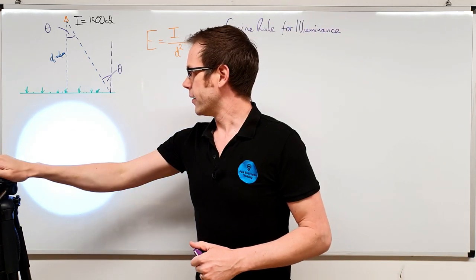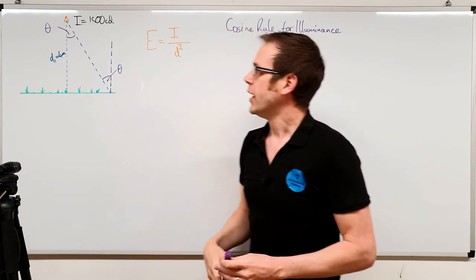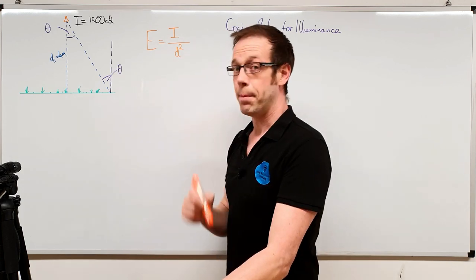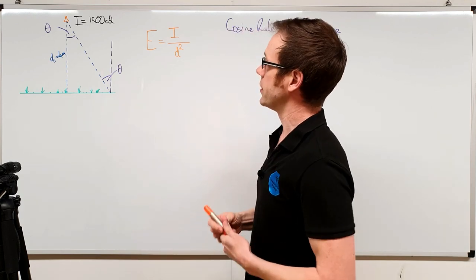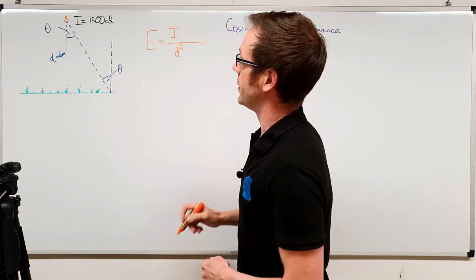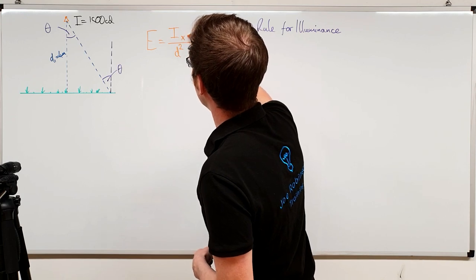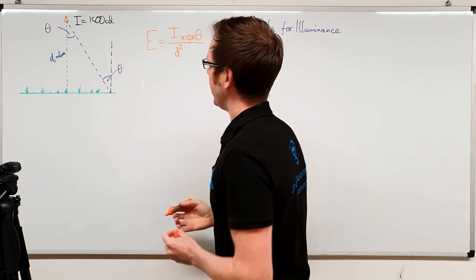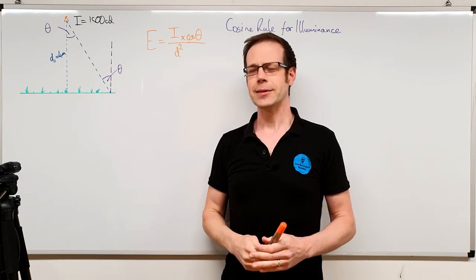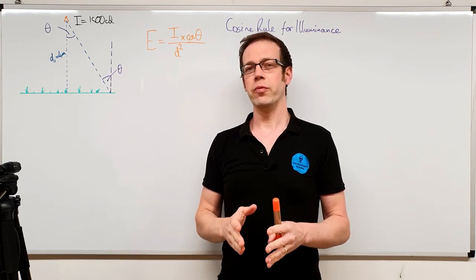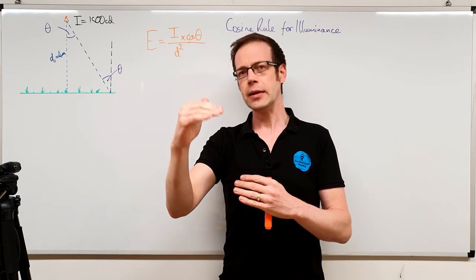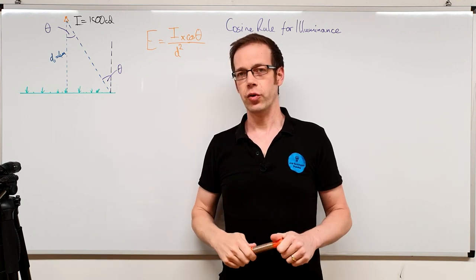So let's think about how this impacts our calculation. What we need to do is modify our original formula. Instead of just I divided by D squared, we're going to add something to the numerator: we multiply by the cosine of theta. You may be wondering why the cosine of theta. We're going to work through a couple of examples which will show this works, and then take it to an extreme point that reveals a very deep truth about this formula.